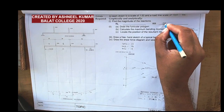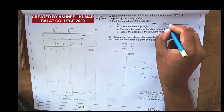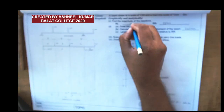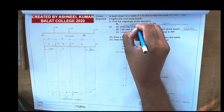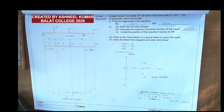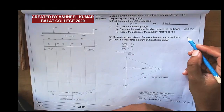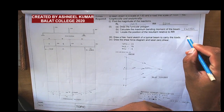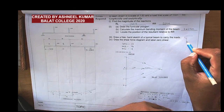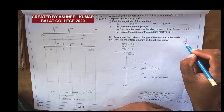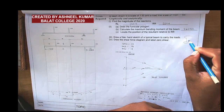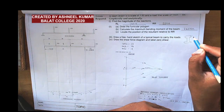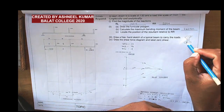I can also write down the reactions — 250 N on one side and 140 N on the other. For the beam sketch, you can draw an I-beam or whichever appropriate beam cross-section you find in your exercise book.